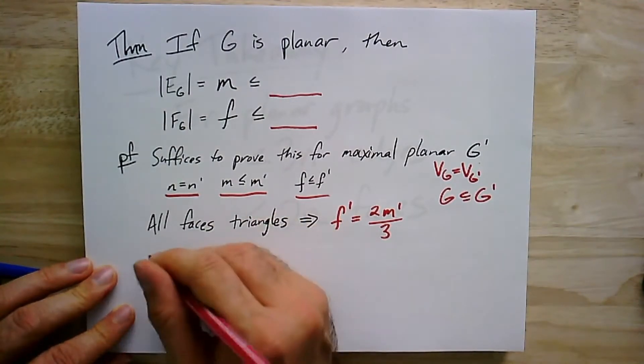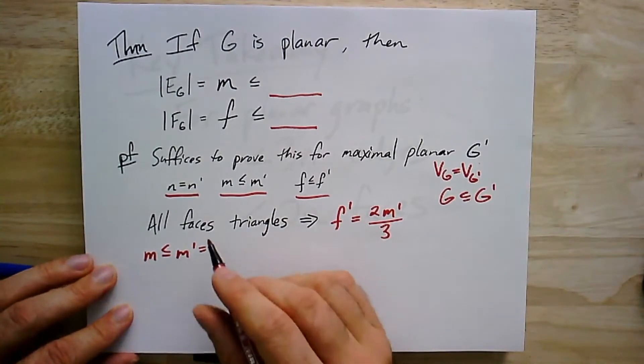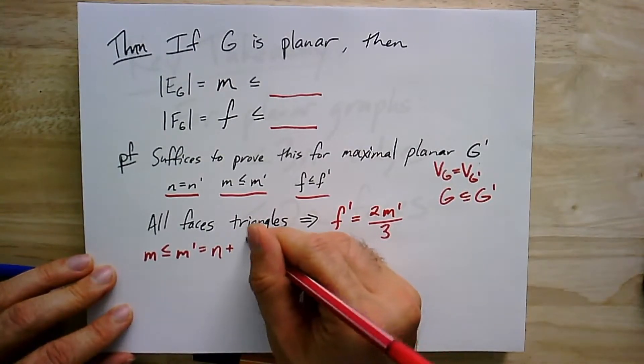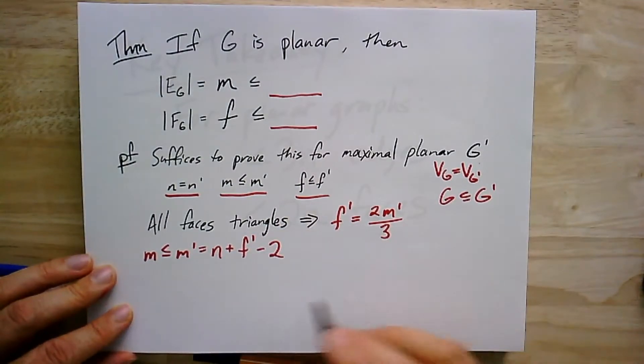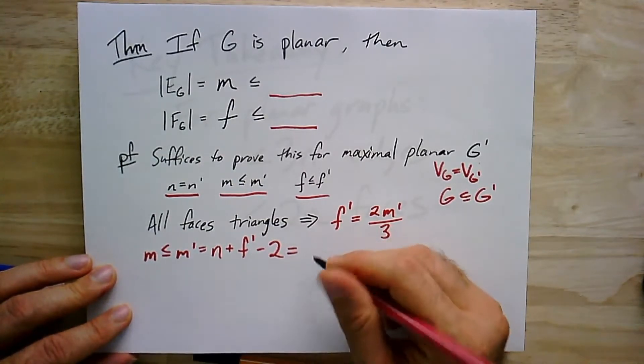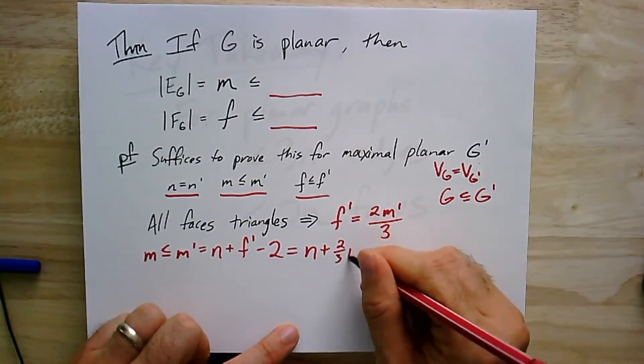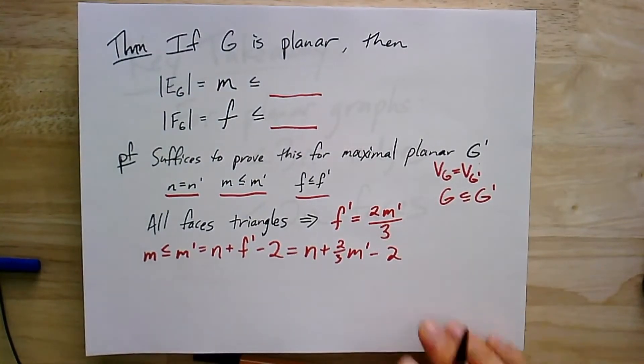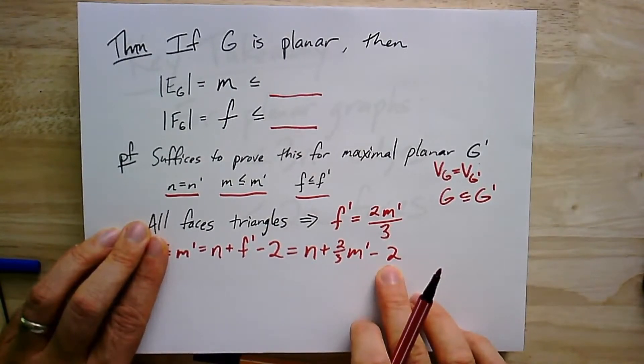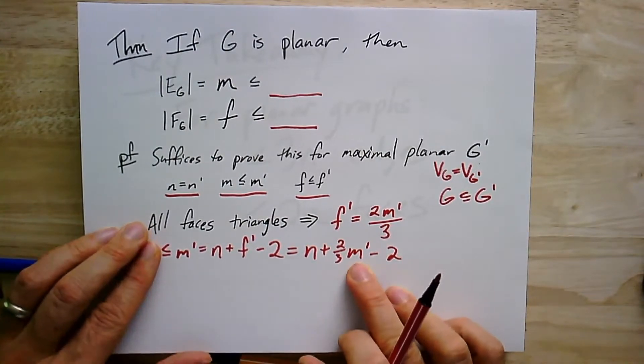So I want to claim, I want to put a bound on m. So we said that m was less than or equal to m', which is equal to, by Euler's formula, if we rearrange Euler's formula, we get n plus f' minus 2. That's me just taking the m and moving it over and 2 moving it to the other side. And this gives me, this is equal to, if I plug this in, that's n plus 2/3 m' minus 2. Now, if I look at just this part of the equation, I've got m' is equal to n plus 2/3 m' minus 2.